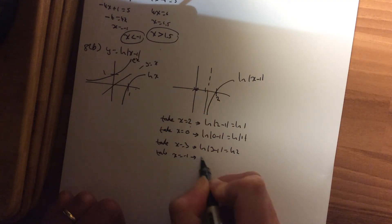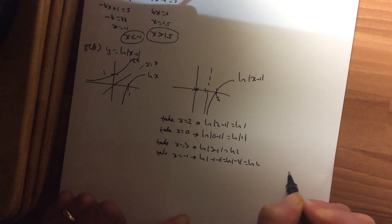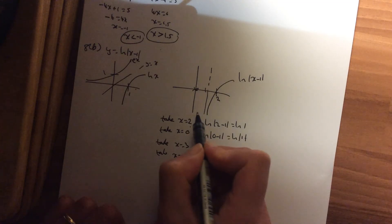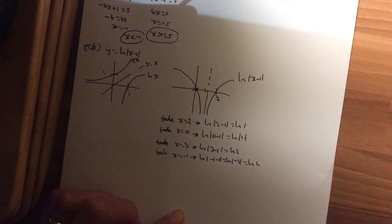So log|-1 - 1|. So log|-2|, which is log 2 when you modulus. So you can see I have got reflection here. And that's our graph.